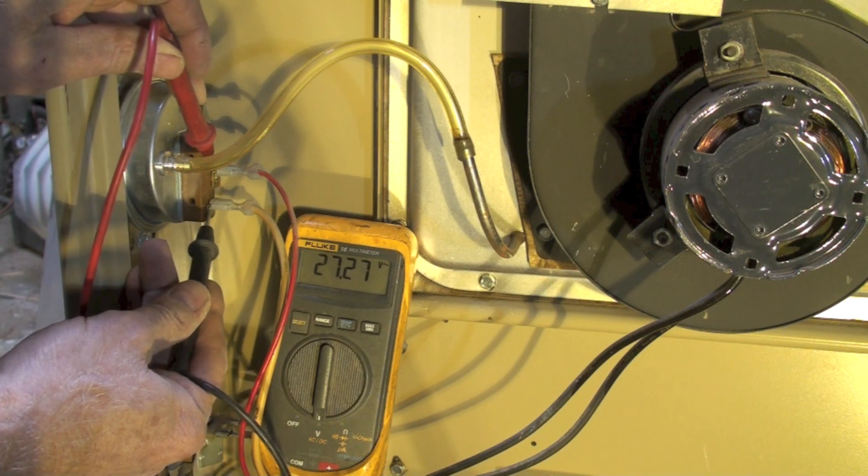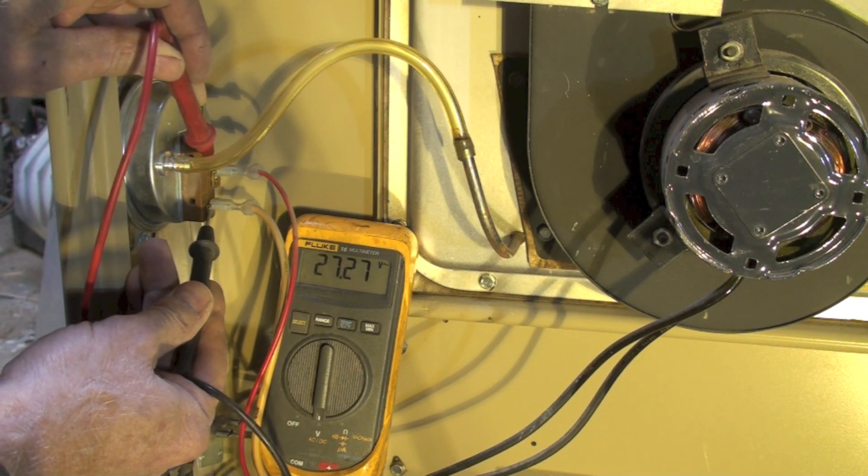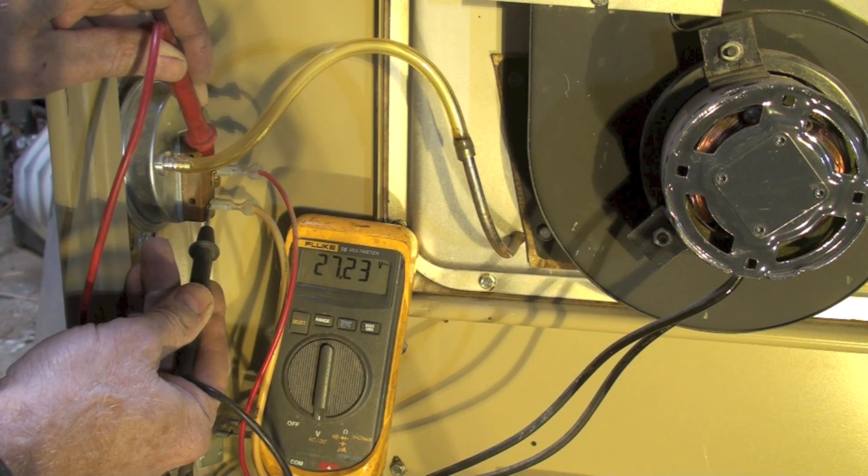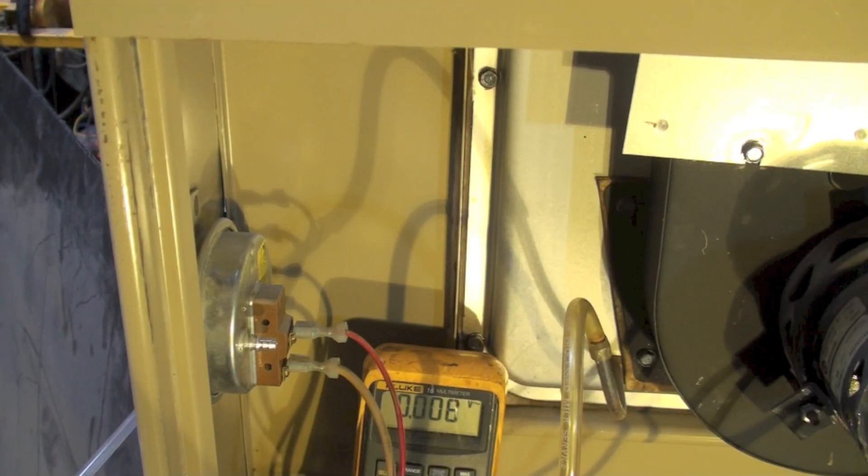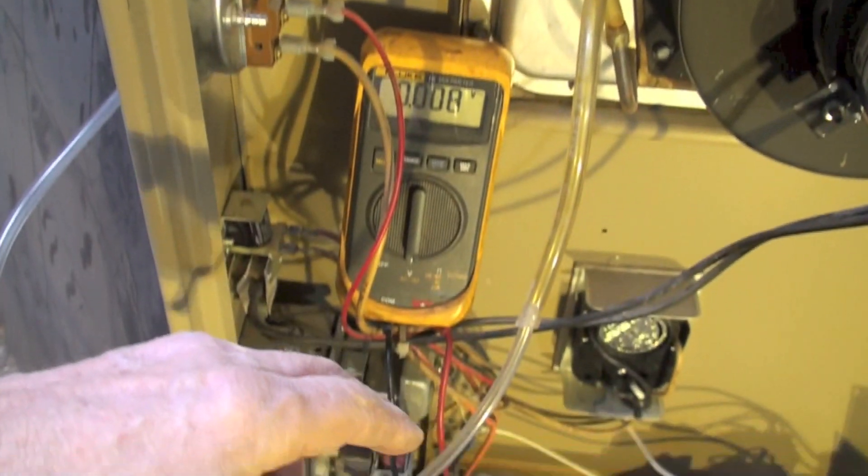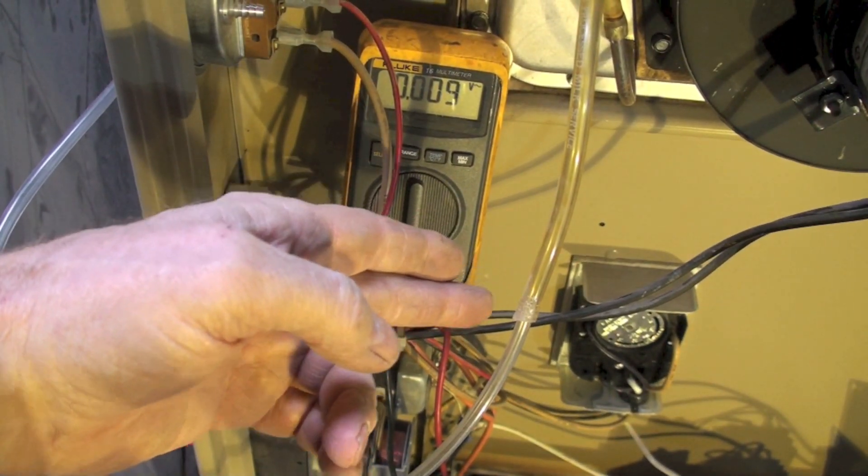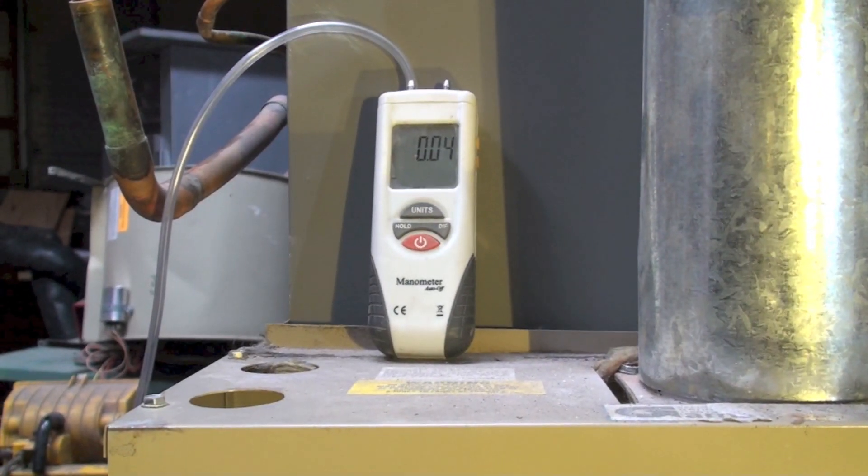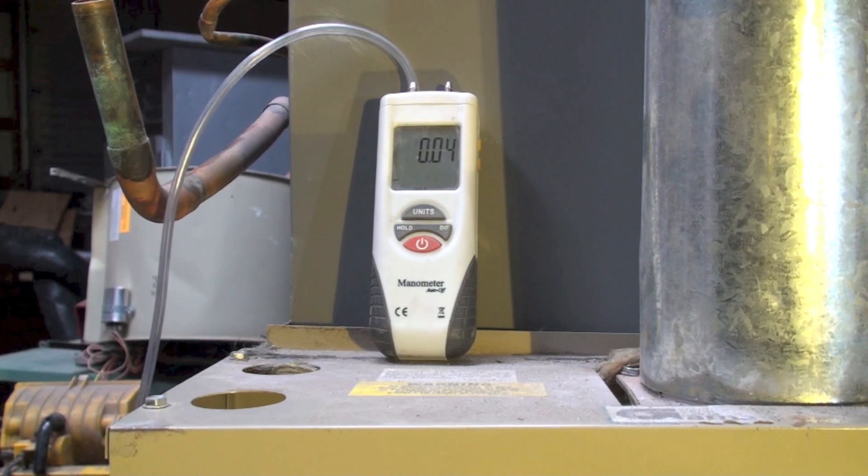Do I replace the pressure switch? Let's find out if we actually have any vacuum. So what I've done is I've taken a manometer, hooked it onto this hose going to the inducer, and I'm showing virtually nothing.